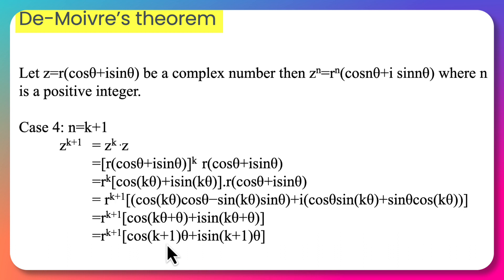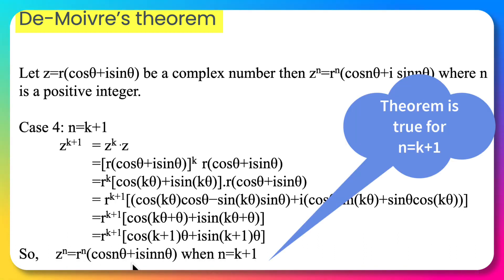Taking θ as common in the quantity of arguments, we conclude that z^n = r^n(cos nθ + i sin nθ) when n = k+1.